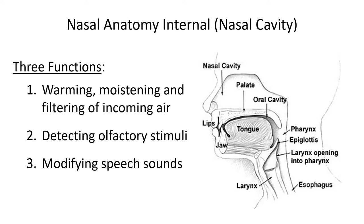The nose and the nasal cavities perform some important functions — they warm and moisten the air, for instance. Imagine you're outside in the winter: the air is probably quite cold and quite dry. The respiratory surface within the lungs needs to be moist in order to function. Pre-warming and pre-moistening the air will greatly decrease water and heat loss at the respiratory surface. A small area of epithelium within the nasal cavities contains the receptors responsible for olfaction, and the nasal cavity also modifies speech — you're probably aware of this if you have a bad cold.